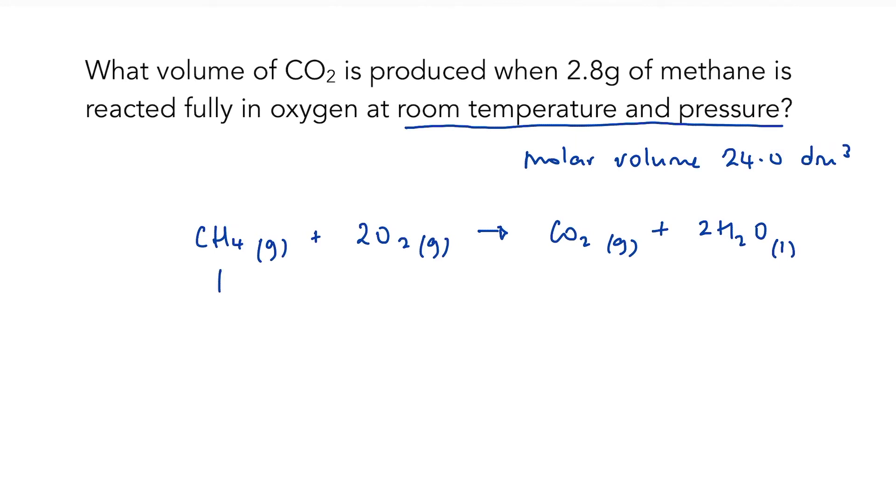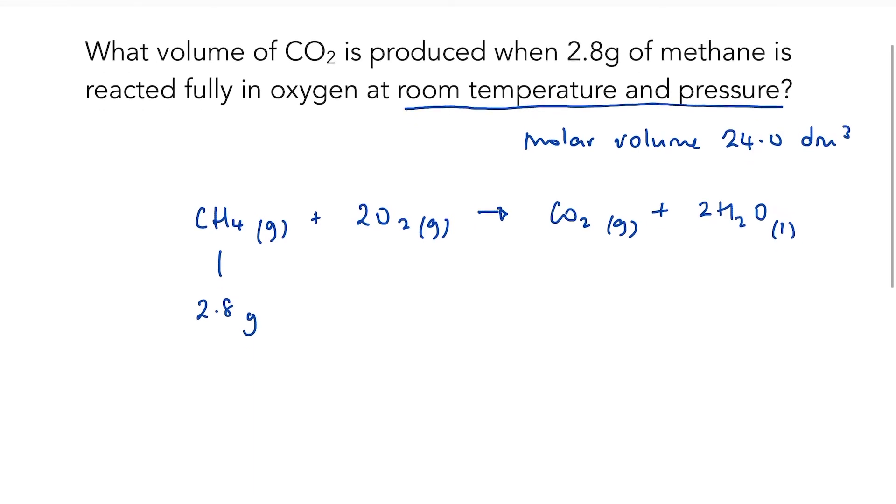What do I know? I know that I've got 2.8 grams of methane. I need to know the number of moles. Moles equals mass divided by molar mass. The molar mass of methane is 16 grams per mole, so it's 2.8 divided by 16, which comes to 0.175 moles.